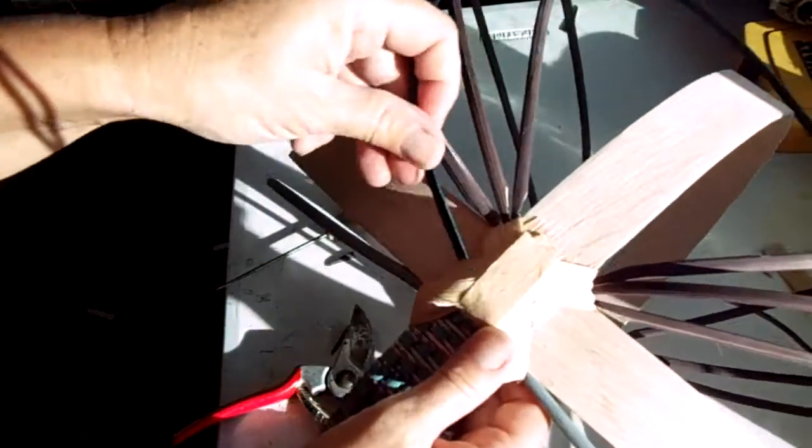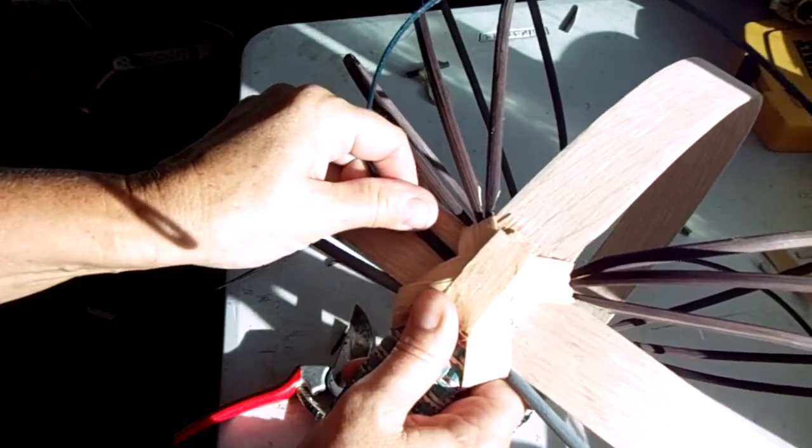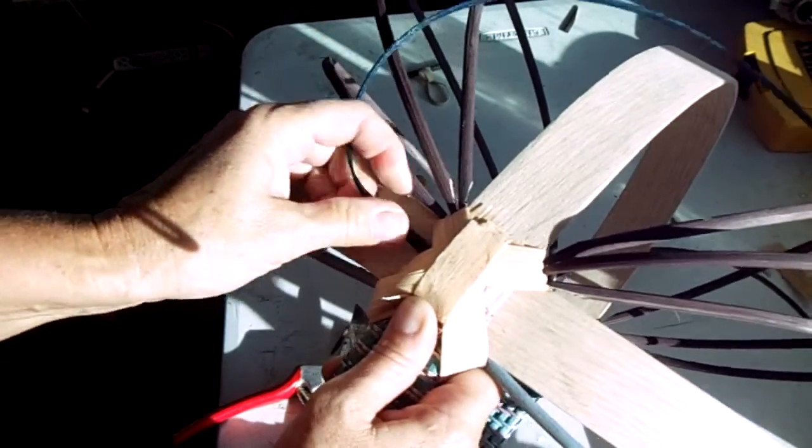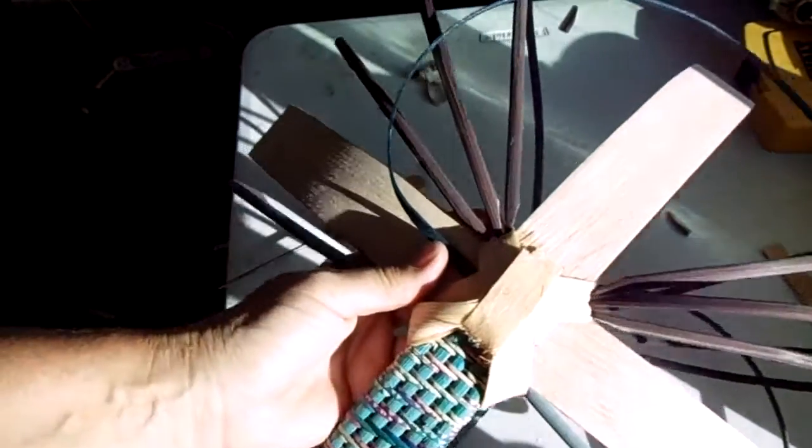What I'm going to do is tuck that weaver underneath that handle and the rim where it's lashed. And then this is just over and under.